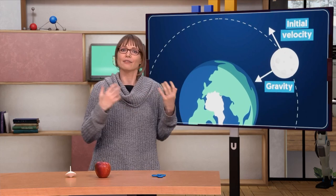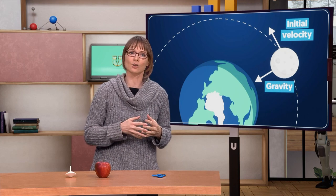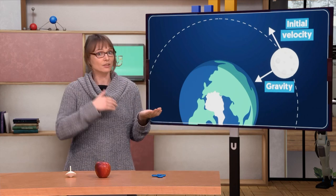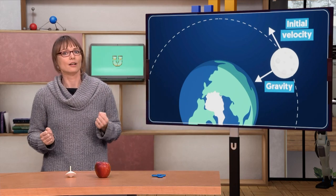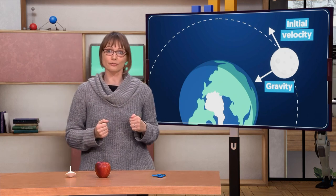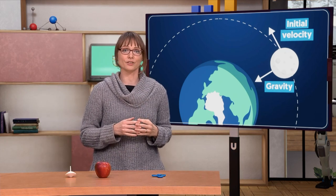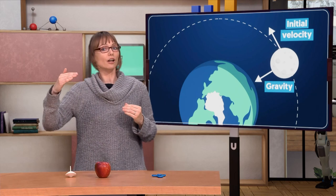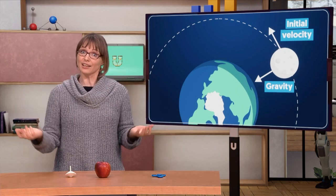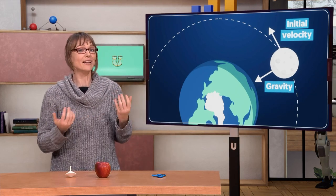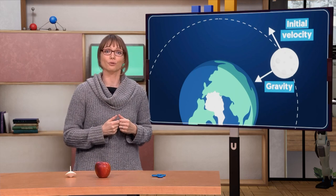Force and velocity are both vectors. Vectors are quantities with a magnitude and a direction. Earth's gravity, so the force of gravity, pulls the Moon towards the Earth. The Moon's velocity, which is perpendicular to this force, prevents the Moon from just falling to Earth.